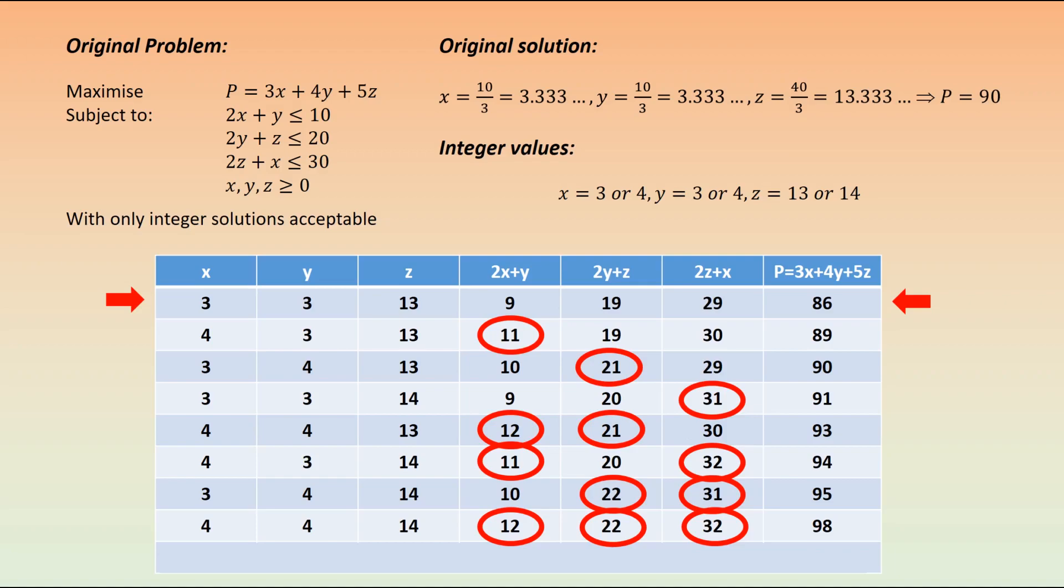For this particular problem, if we let x equal 2, y equals 3, and z equals 14, we see that the constraints are still stuck to. However, our value of P is now bigger, so this is a better solution. With optimal values, having checked the other possible combinations of numbers, this is the best that we can do. But to check the other ones, it does take a little bit of time.